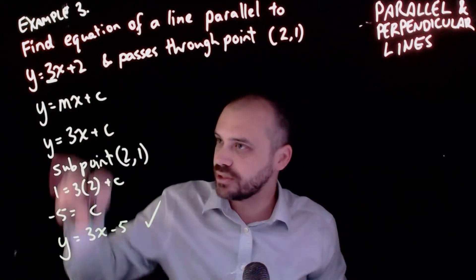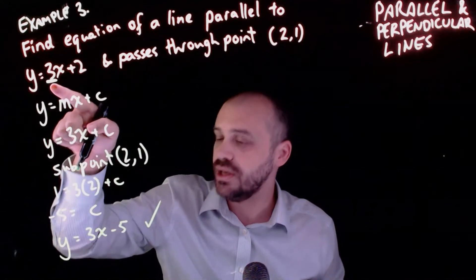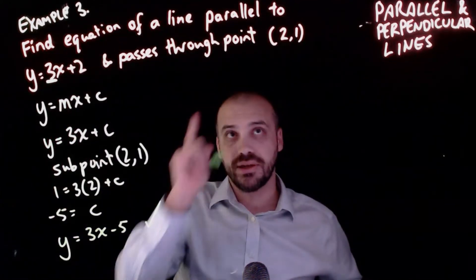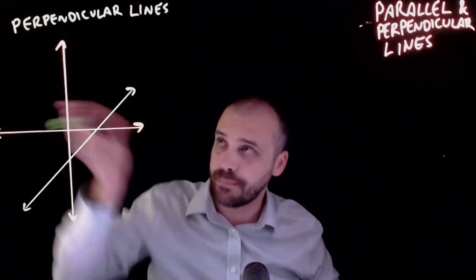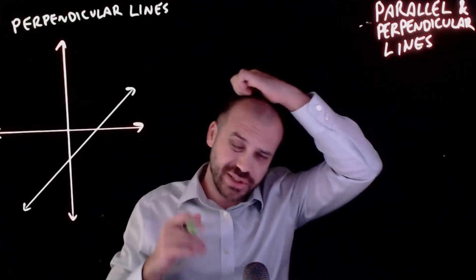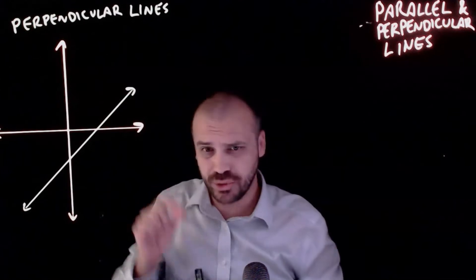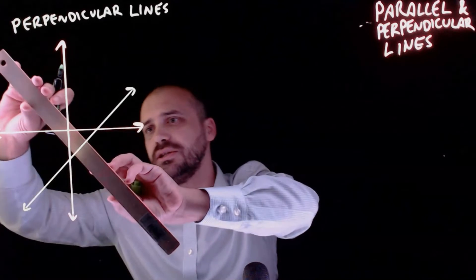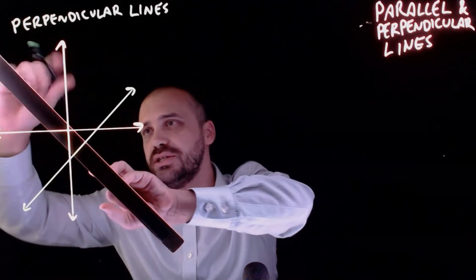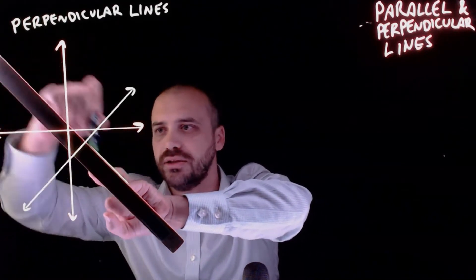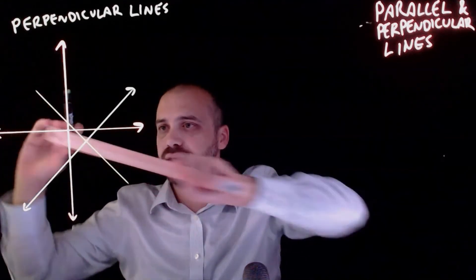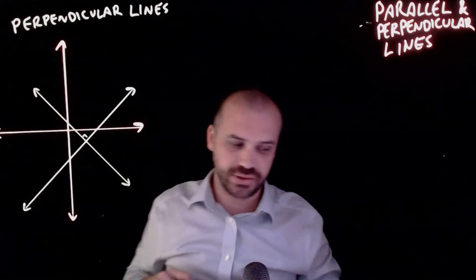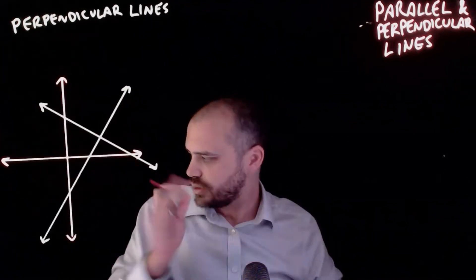This line is parallel to that line and passes through that point. Now it's time to talk about perpendicular lines, which have a slightly different, slightly more complicated relationship. Here is a line. A perpendicular line makes a 90-degree angle with that line. So these two lines are perpendicular - there's a right angle there.